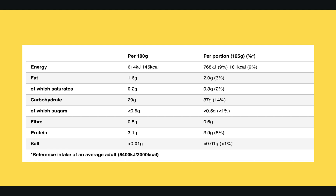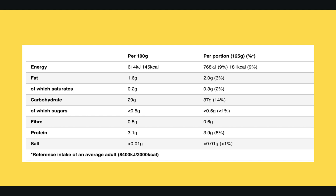Here is an example of a food label. By law, all foods have to declare per 100 grams or per 100 mils how much energy, fat, carbohydrates, fiber, protein, and salt is in the food. Some labels will also tell you per portion as well. The main value we want to look at is protein. We can see per 100 grams there are 3.1 grams of protein in this product.